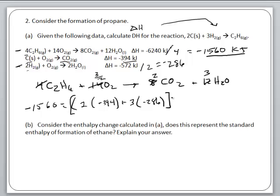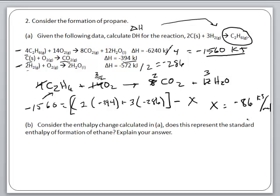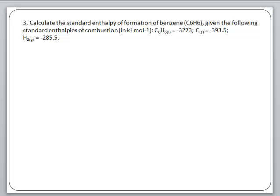Those are our products. What we're looking for — to solve this equation — is the formation of C2H6, which we don't have, so we call that x. When we solve for x, that gives us the formation of C2H6, which is negative 86 kilojoules per mole. Part B asks: does this represent the standard enthalpy of formation of ethane? Yes — that's exactly what it represents and what we calculated.